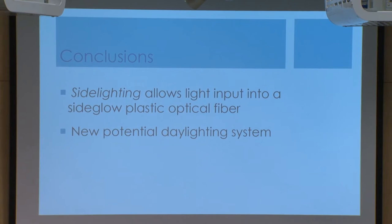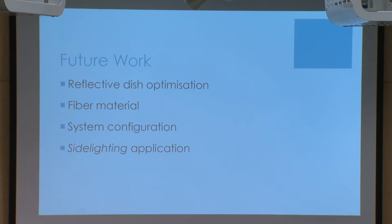In conclusion, I have looked at side lighting as a new way of putting light into a fiber without using the tip, and it is a potential way to replace tracking systems in current fiber optic lighting systems. With all components integrated, one fiber at optimal performance is equivalent to about a 530-watt light bulb. For future work, the reflective dish and fiber material need optimization, and environmental factors like weather, surrounding buildings, shadows, and local sunlight levels must be considered. Side lighting itself needs better quantification since it's based on random imperfections.